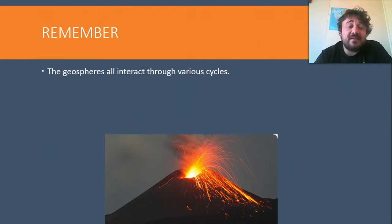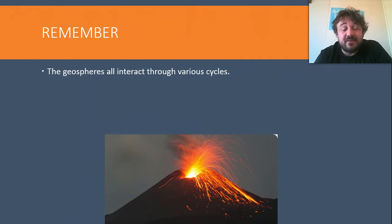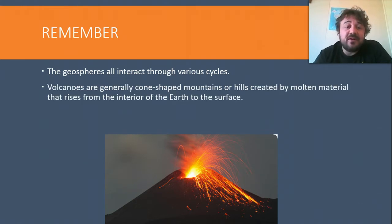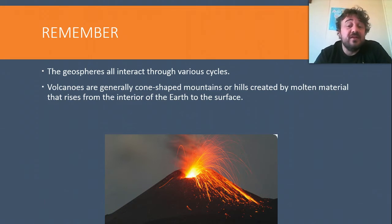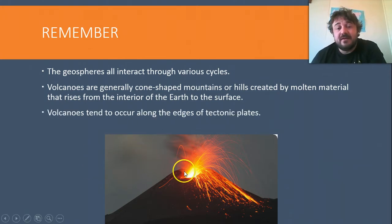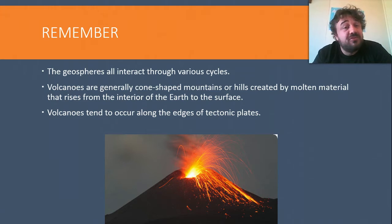What do you need to remember? Basically, the geospheres all interact through various cycles. Volcanoes are generally cone-shaped mountains or hills created by molten material that rises up from the interior of the Earth to the surface. They tend to occur along the edges of tectonic plates - not always, but that's where they tend to occur.